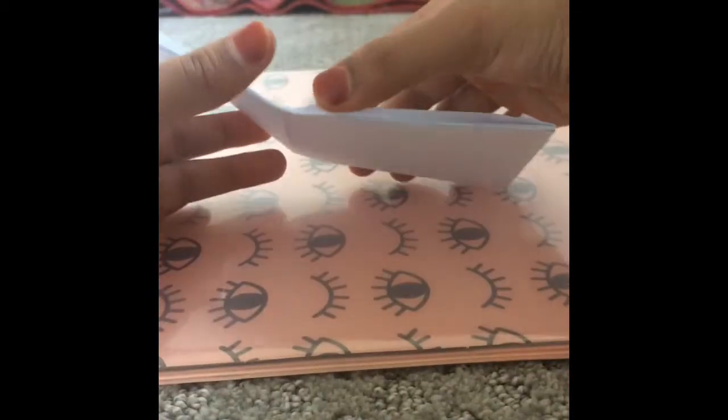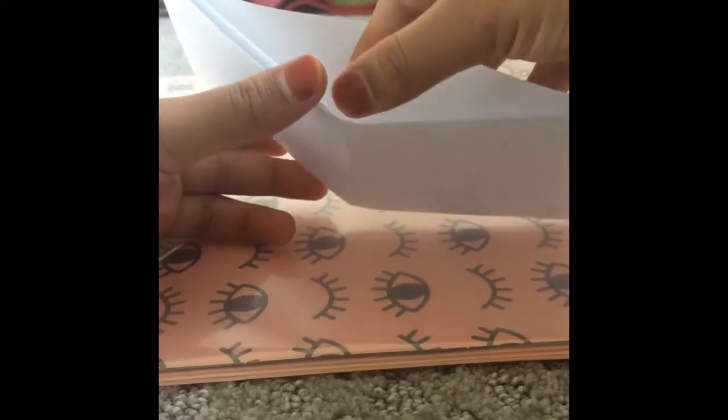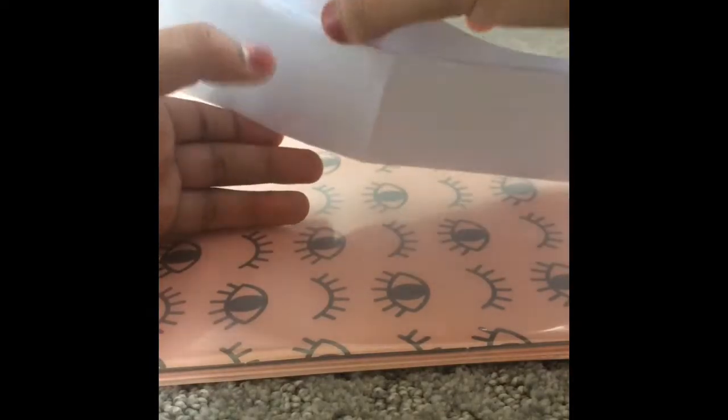And voila, we've made a wallet! So this is how it looks like. One here is two-sided, and then once you flip it it is three-sided. So one, two, three. So this is a double-sided wallet.